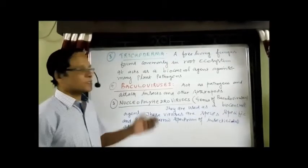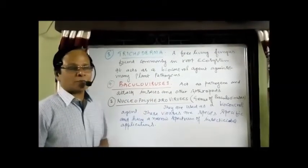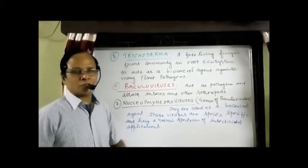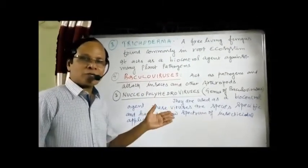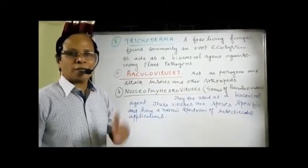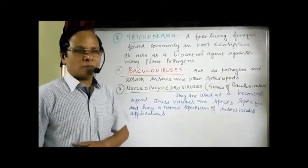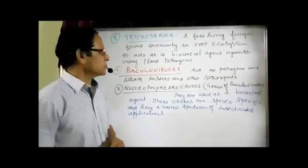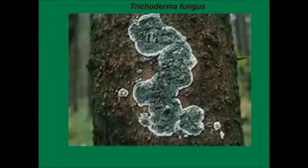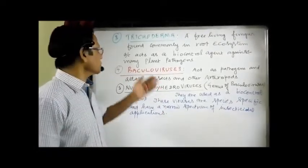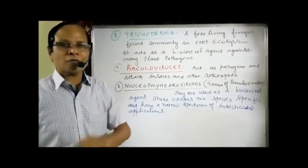The next biopesticide organism is Trichoderma — a free-living fungus normally found in the root ecosystem. It is being used as a biocontrol agent against plant pathogens — the organisms which cause disease to plants. Many plant pathogens are being destroyed with the help of Trichoderma, a free-living fungus.